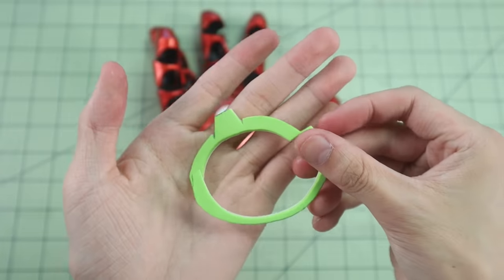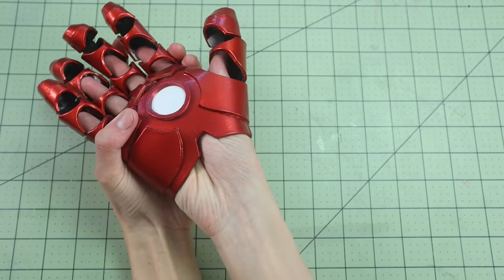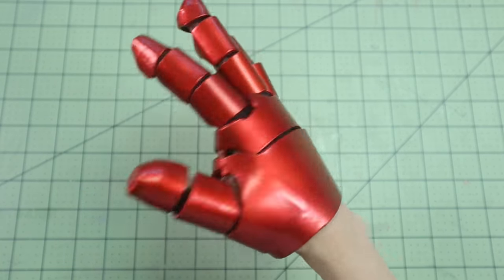Now there's actually two more pieces on the template that are supposed to be glued onto the bottom of the hand right there, but I just ignored those because it would have blocked my hand from being able to slide in and out.